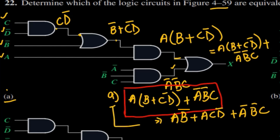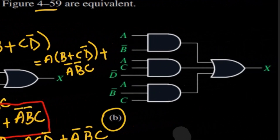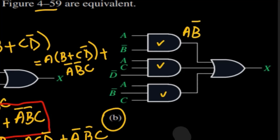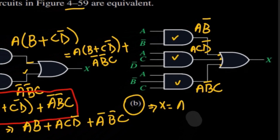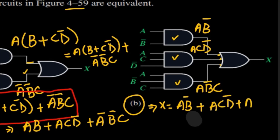Similarly for part B, we have three AND gates. The output of the first AND gate is A·B prime, the second gives A·C·D prime, and the third gives A·B prime·C. These three outputs are applied to an OR gate, giving us: X = A·B prime + A·C·D prime + A·B prime·C.